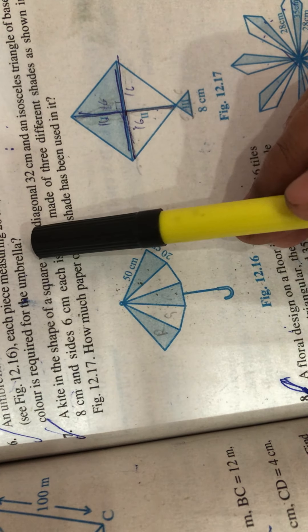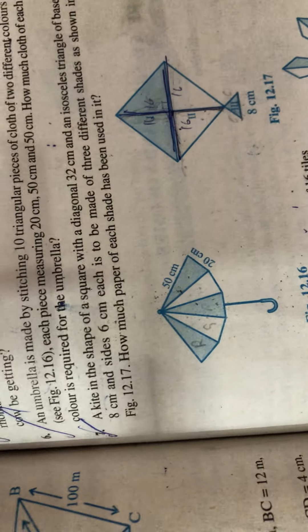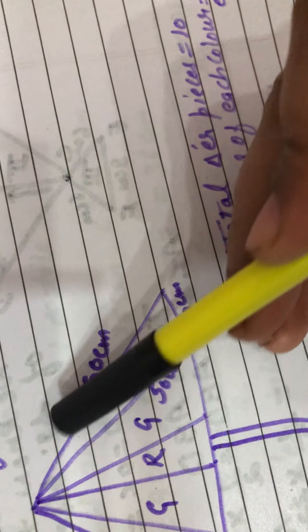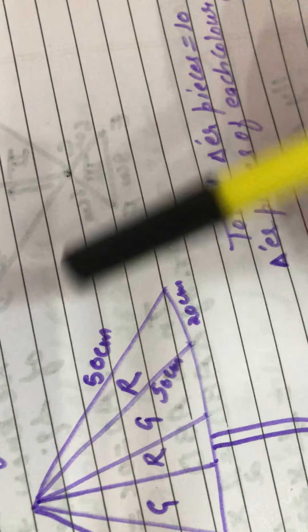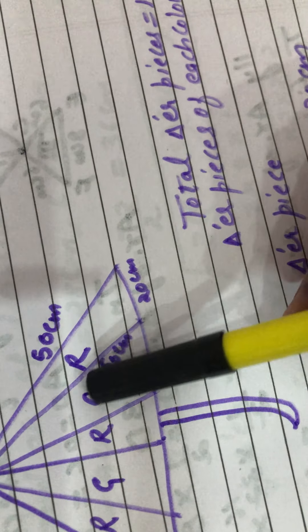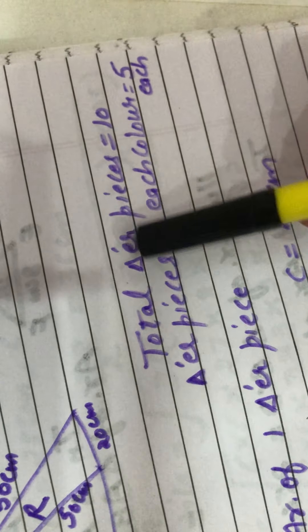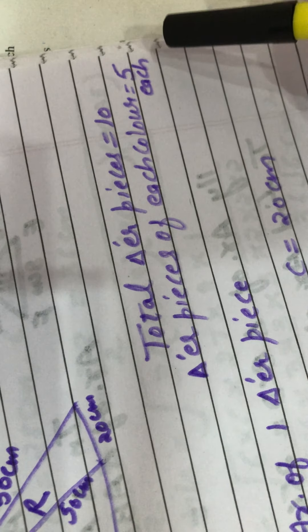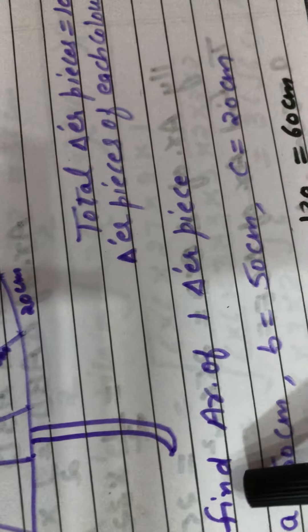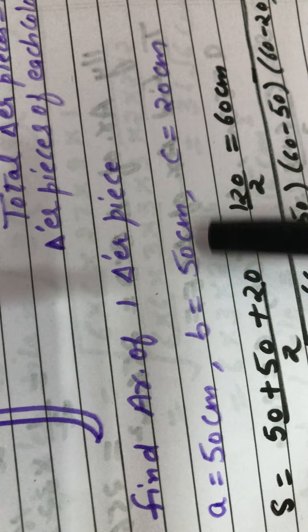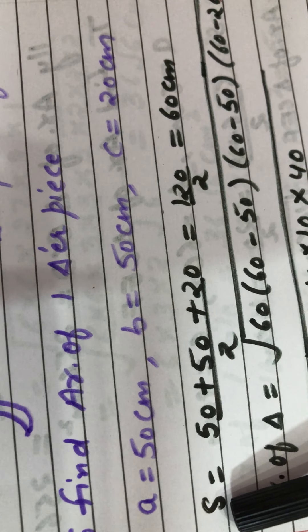To solve it, we take any one triangular piece. The dimensions of this triangle are given. First we'll find the area of one triangle. Total pieces are ten, and triangular pieces of each color are five each. The area for each color will be the same, so first we find the area of one triangular piece.